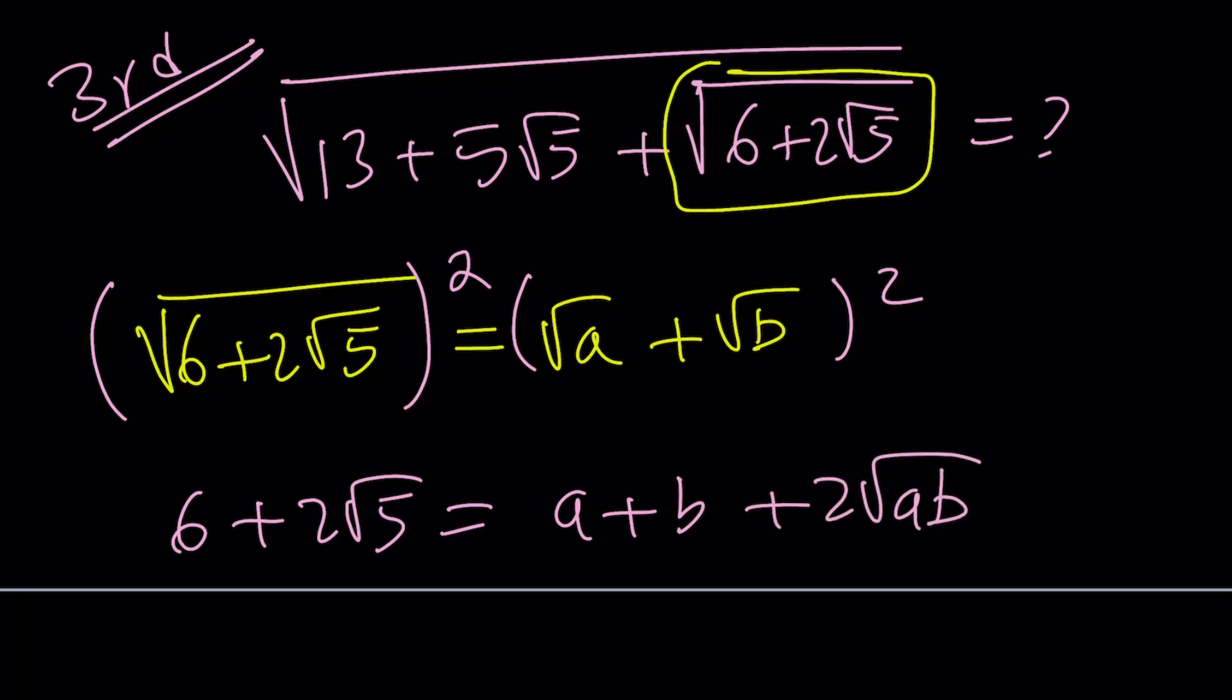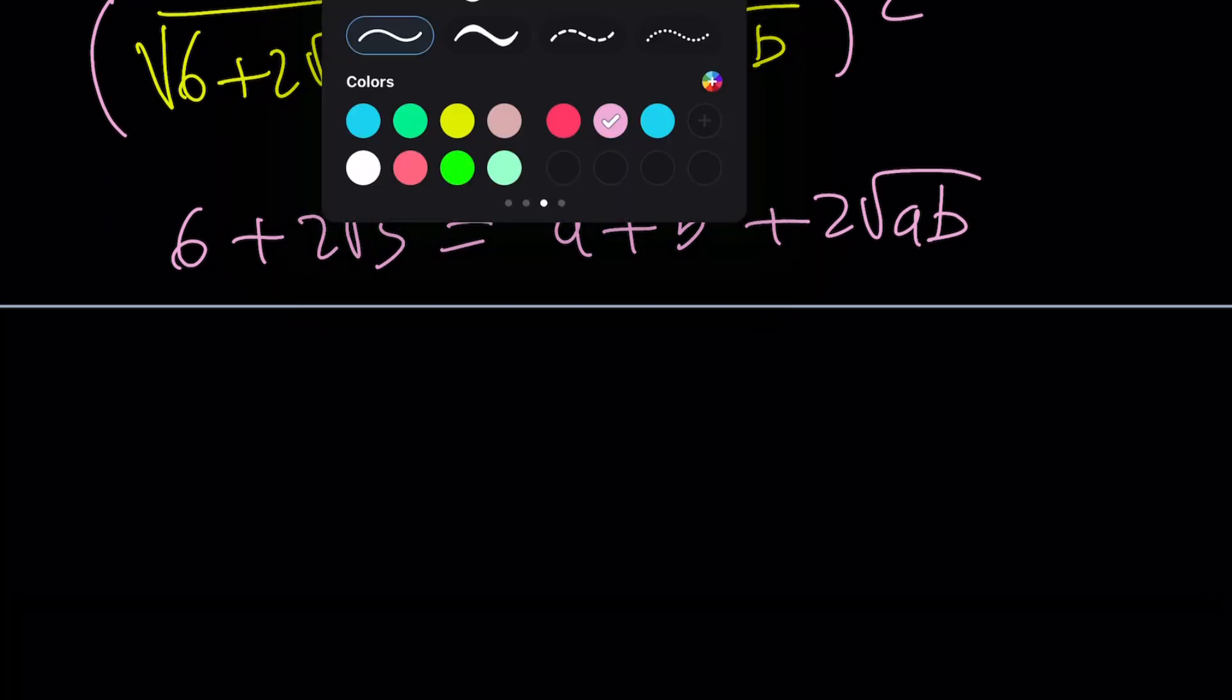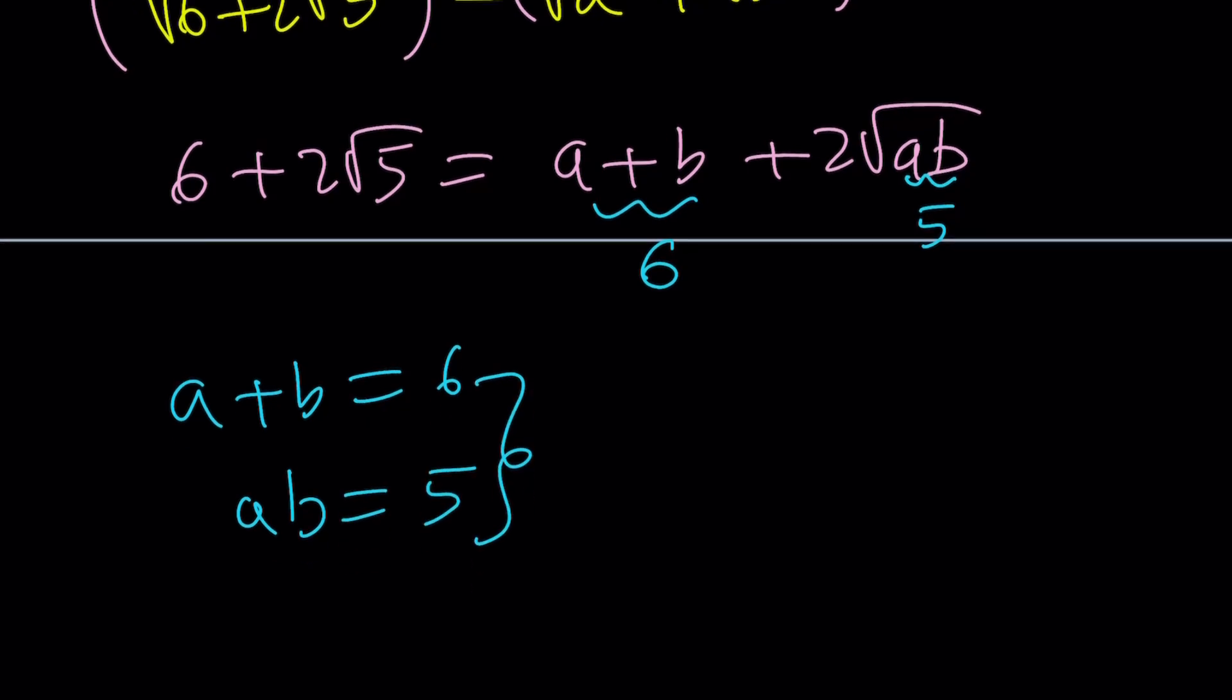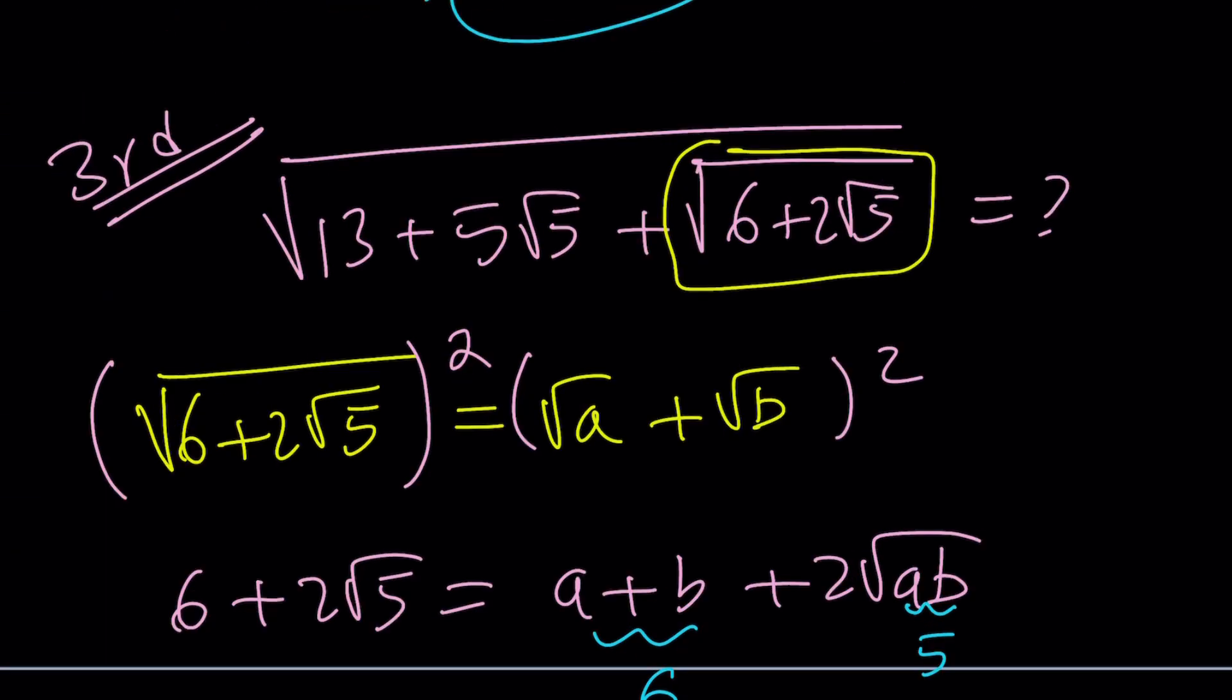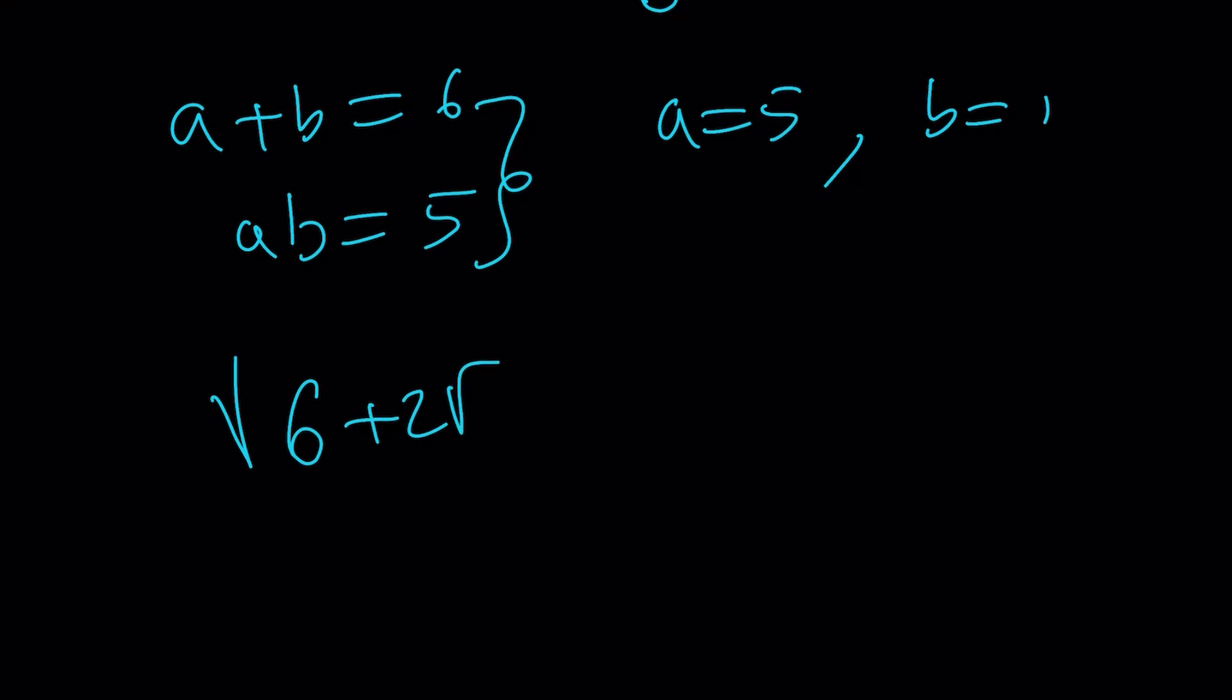You're going to get 6 plus 2 root 5 equals a plus b plus 2 root ab. So, it kind of comes down to what we talked about at the beginning. But anyways, from here by comparison, you get that a plus b is 6 and ab is 5. Let's go ahead and write it as a system. This is like a really simple system to solve. And just by guessing and checking, you're going to get a is 5, b is 1. By the way, a, b are interchangeable, so it doesn't matter which one is which. And the answer is going to be square root of a plus square root of b. Therefore, the square root of 6 plus 2 root 5 can be written as root 5 plus 1.